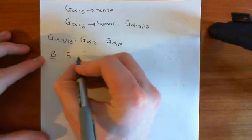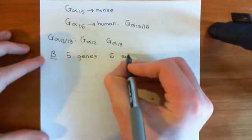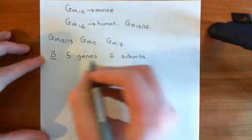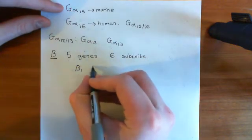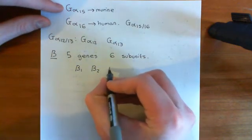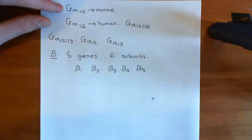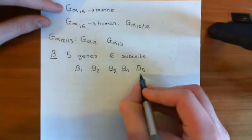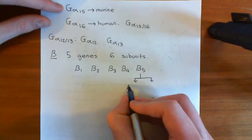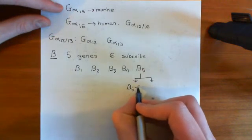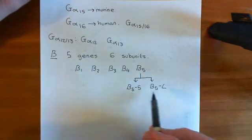For beta, there are five genes, and then there are six subunits. We can understand how this can be — it's again going to be because one of these genes has two splice variants. The five genes for beta are named very nicely: beta 1, beta 2, beta 3, beta 4, and beta 5. These are the five genes which code for five different beta subunits. But this beta 5 gene has actually got two different splice variants: one splice variant called beta 5S, and then beta 5L as its other splice variant.